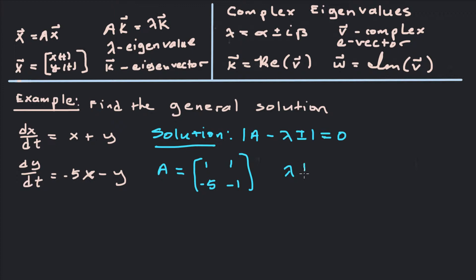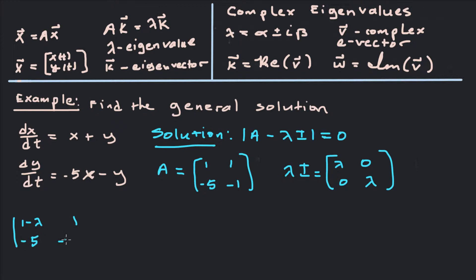Lambda·I is just lambda times the identity matrix, which is [λ, 0; 0, λ]. We want to take the determinant of A − λI. So A − λI is going to be [1−λ, 1; −5, −1−λ]. Take the determinant and set it equal to 0. That gives us (1−λ)(−1−λ) + 5 = 0.